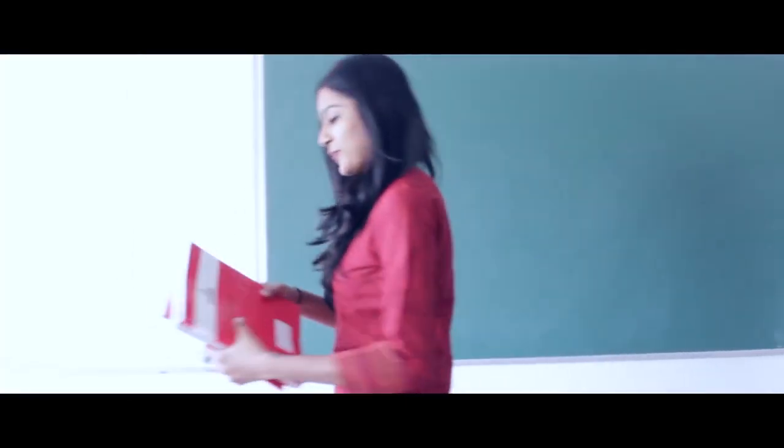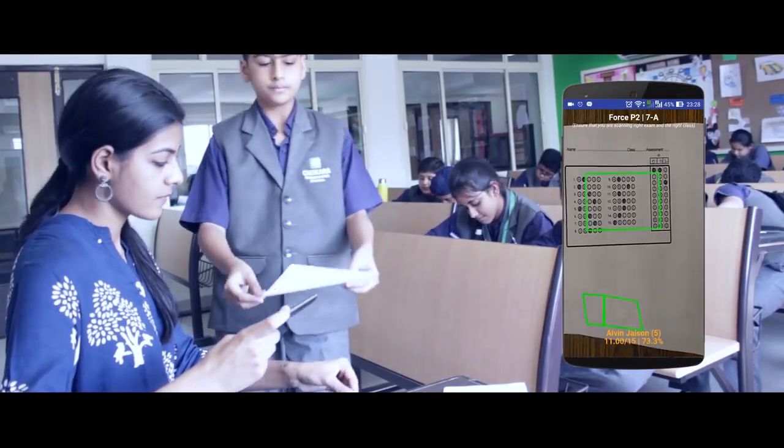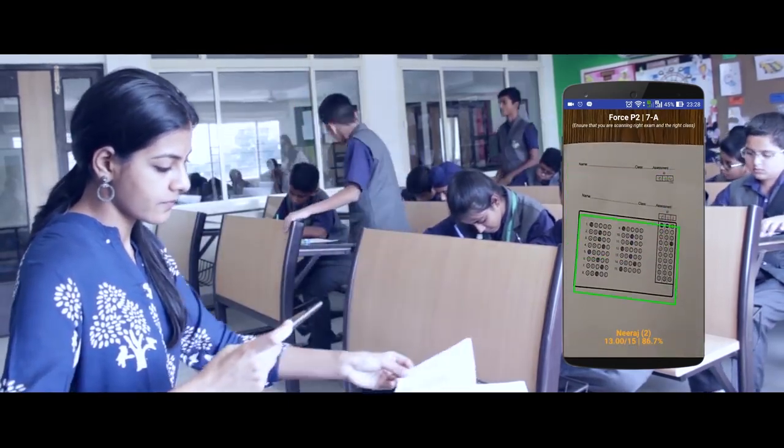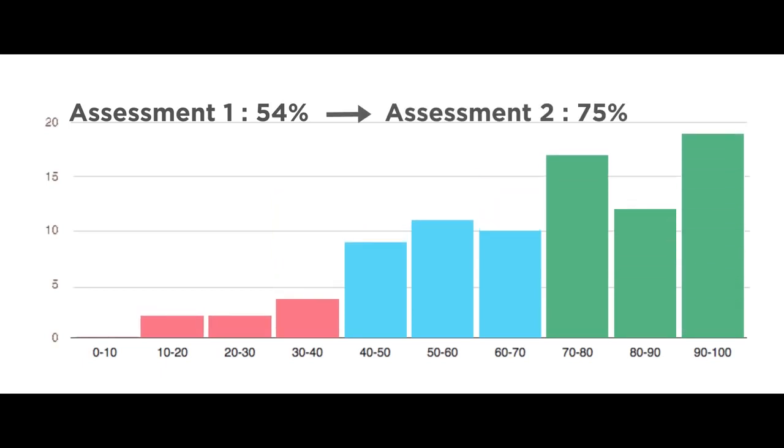I go back to the class next day to work on the learning gaps. In order to see how well the children have improved, I take Open Door second assessment after a few days. Class average has increased from 54 to 75%.